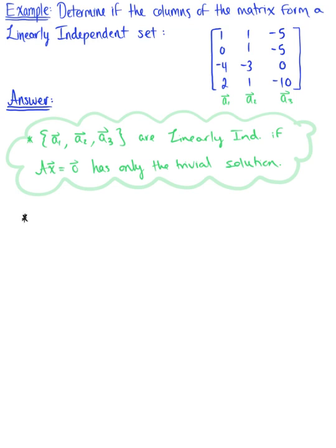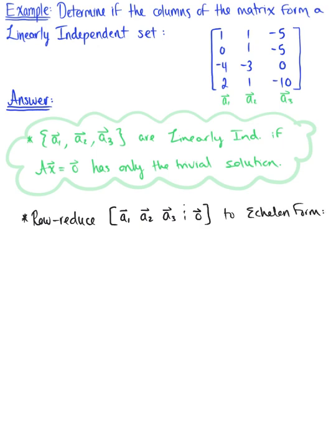So let's check. To check this, we need to row reduce the augmented matrix — the matrix with column vectors a sub 1, a sub 2, and a sub 3. We row reduce the augmented matrix with the zero vector to echelon form to study what is going on with the corresponding homogeneous equation.